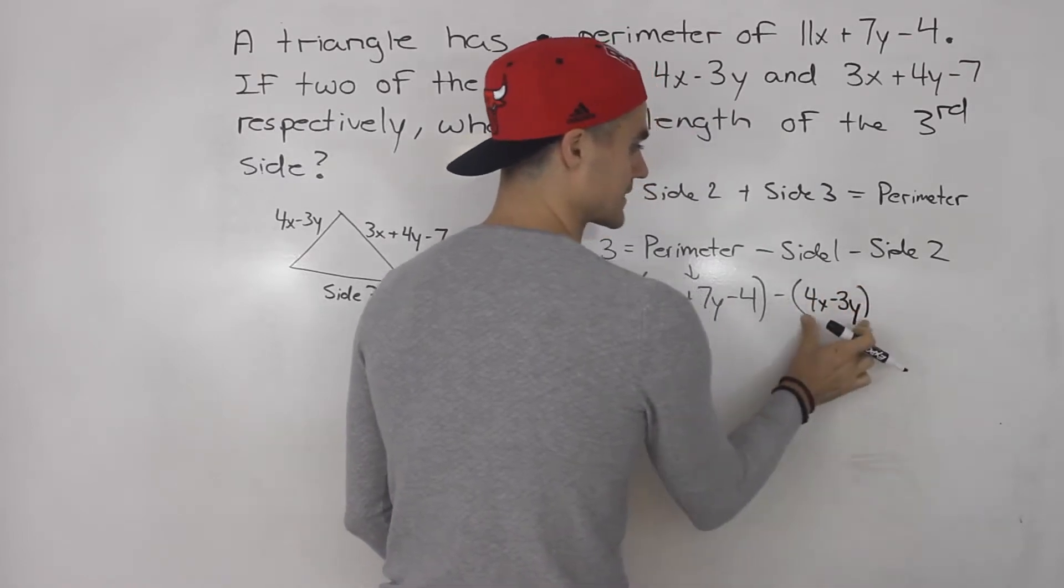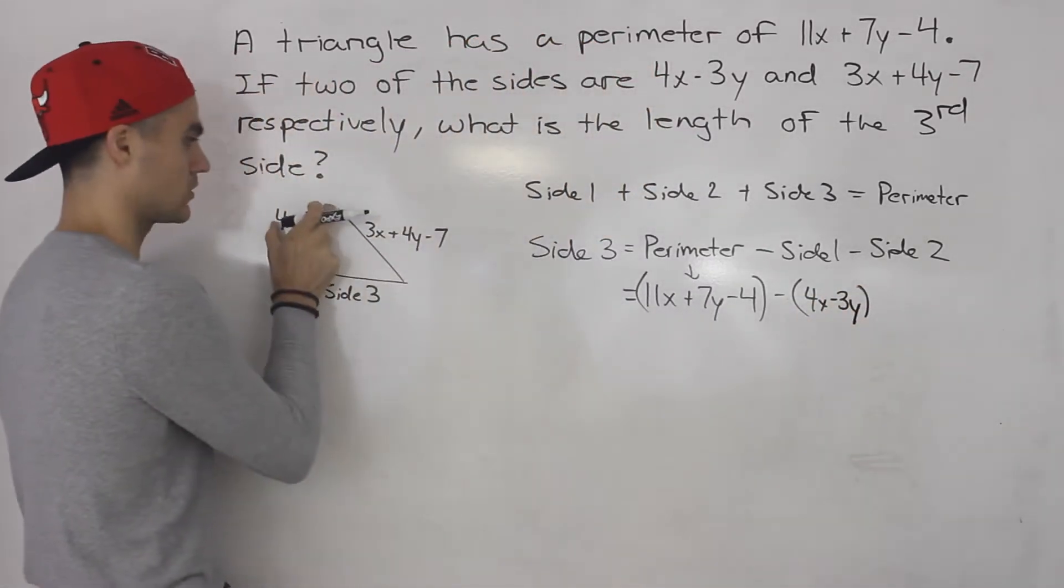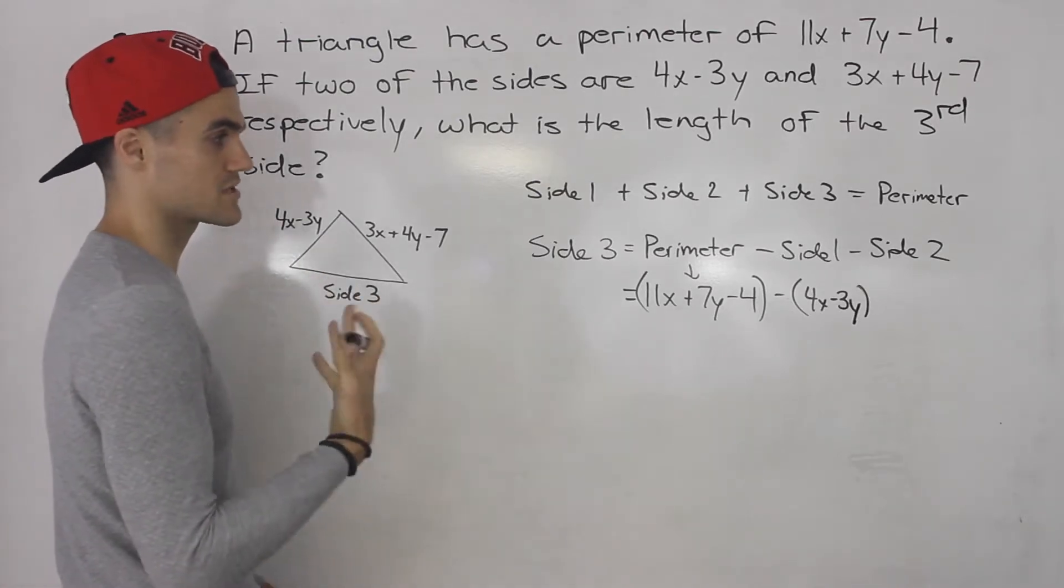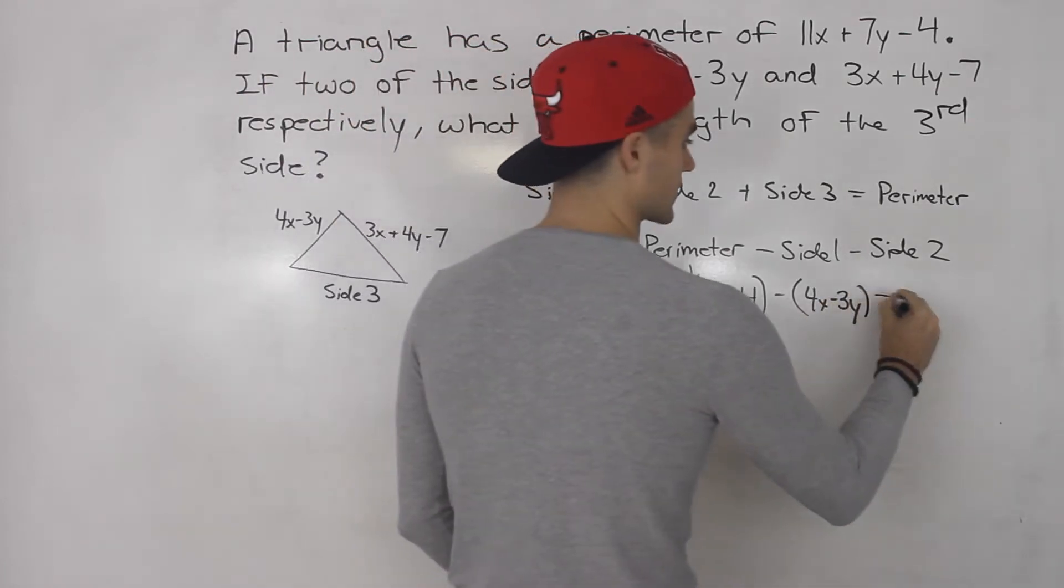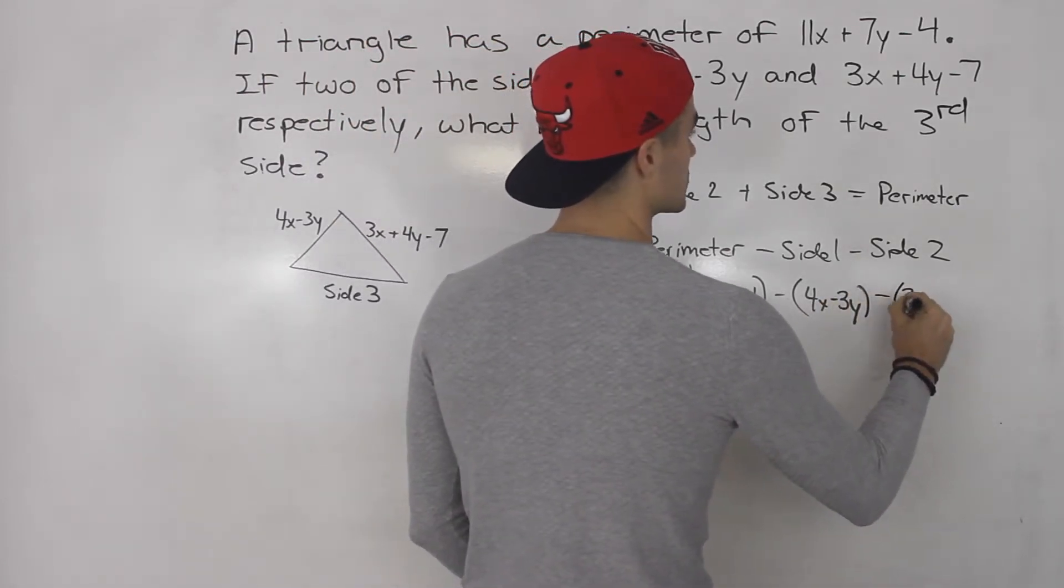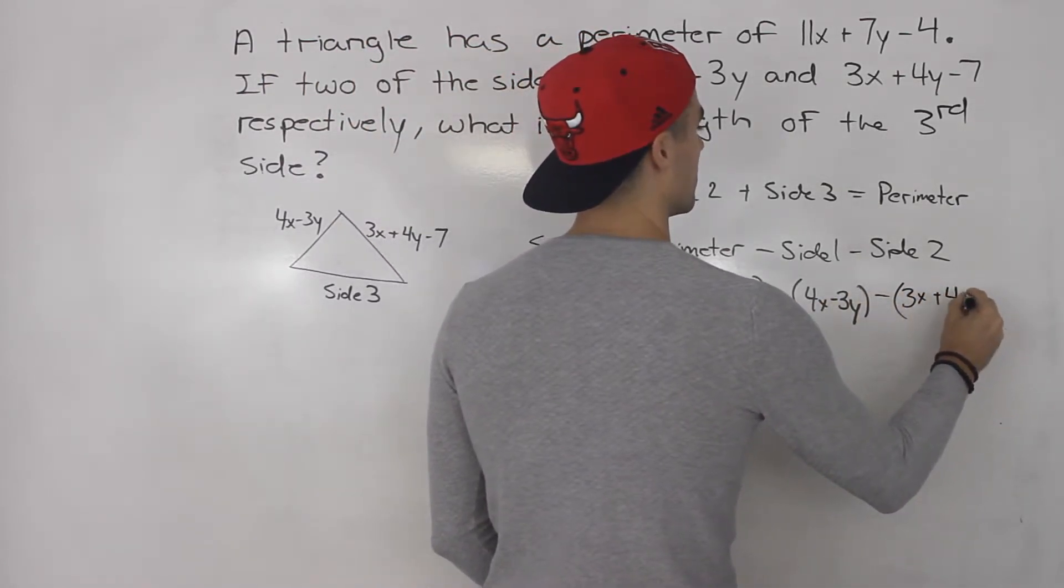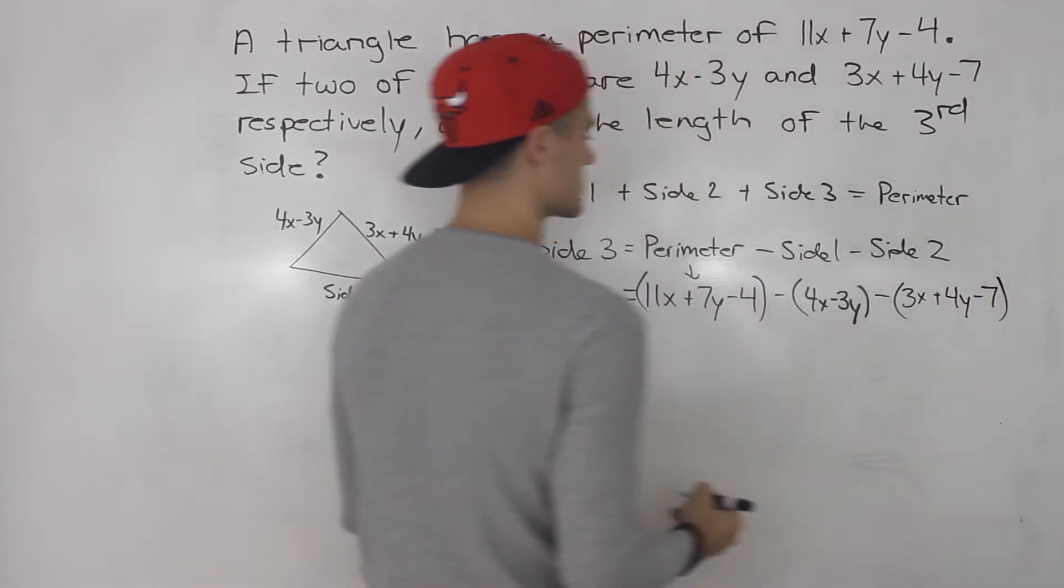And we're subtracting that whole expression because that whole expression represents the whole side of the triangle. So you got to make sure you put that in brackets. Then we're subtracting the second side which is 3x plus 4y minus 7.